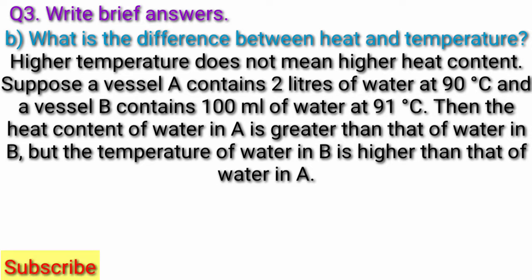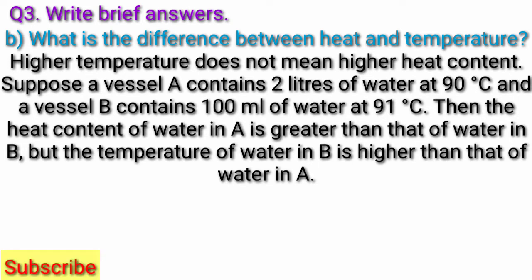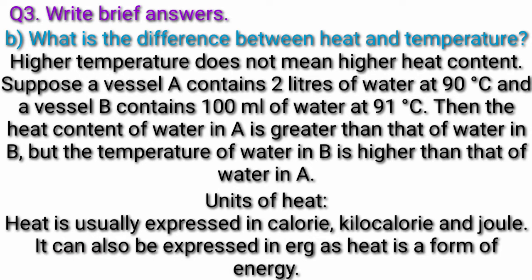Suppose a vessel A contains 2 liters of water at 90 degrees Celsius, and a vessel B contains 100 ml of water at 91 degrees Celsius. Then the heat content of water in A is greater than that of water in B, but the temperature of water in B is higher than that of water in A. Units of heat: Heat is usually expressed in calorie, kilocalorie, and Joule. It can also be expressed in erg, as heat is a form of energy.